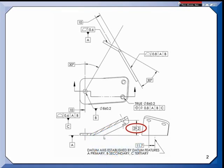Then we have this 29.2 dimension coming from our primary datum plane and the 11.7 coming from the plane passing through datum feature B's axis. But we need one more dimension to locate this point in three-dimensional space, and that is this 10 millimeter dimension. So now I've located this point in space, and then the axis goes off at this compound angle.